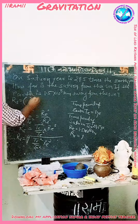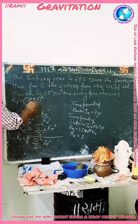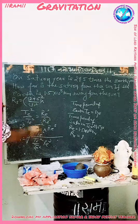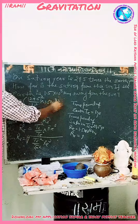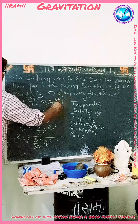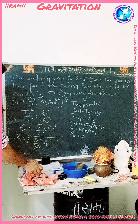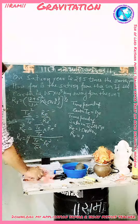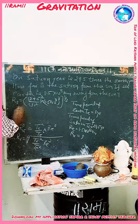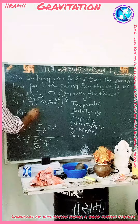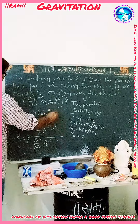Rs is equal to: Ts is 29.5 squared, Te is 1 squared, and Re is 1.5 into 10 to the power 8 km, all raised to the power of one-third. Simplifying, we get Rs is equal to 1.43 into 10 to the power 9 km.